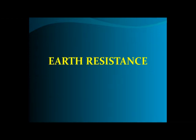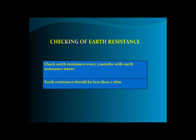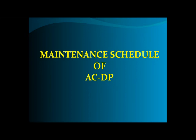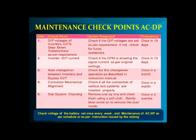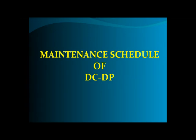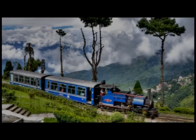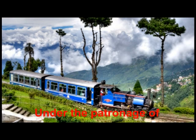Earth resistance: Check earth resistance every 3 months with an earth resistance meter — it should be less than 2 ohm. Maintenance schedule of AC Distribution Panel (ACDP) and maintenance schedule of DC Distribution Panel (DCDP) are to be followed as specified.